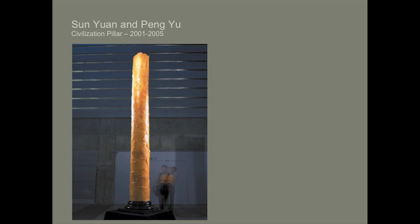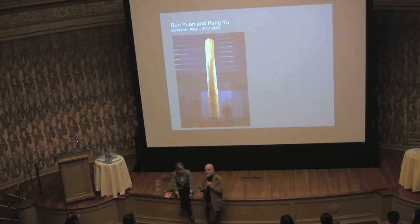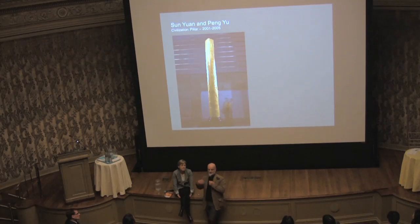Then we have another school of thought where artists deal with the reality of China, which at times can be quite brutal. It's a pillar made of human fat. There was a period where artists did a lot of works with body parts — works which could not be shown in the West. This is a very mild version of this school. They deal with taboos, but it also indicates that their taboos are very different from ours. These works were exhibited in China but could not be exhibited in the West.